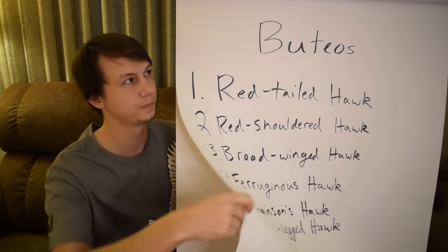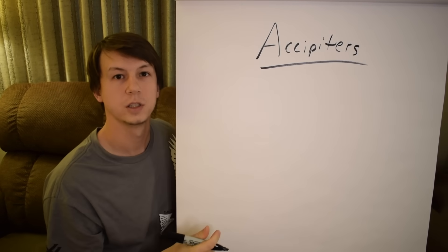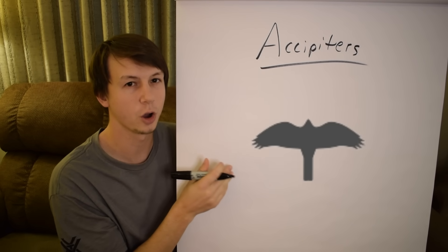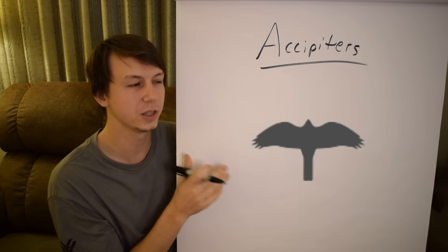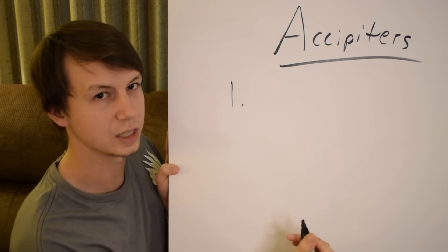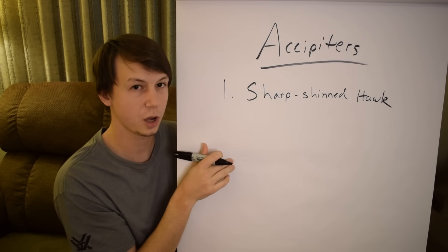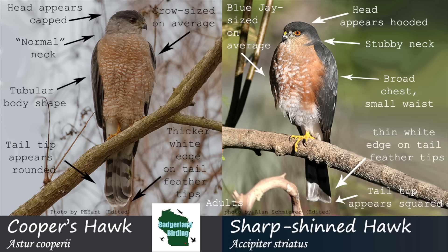Now we're going to move on to our accipiters. This would have been easier until 2024, when we had some really recent taxonomic changes. In general, accipiter hawks are going to have shorter wings and a longer tail — very maneuverable. These are hawks you may see hunting at your bird feeder. That still includes the sharp-shinned hawk. Sharp-shinned hawks look extremely similar to Cooper's hawk. Both have gray-blue backs as adults, a reddish-barred stomach as adults, and fairly long tails, and they can be difficult to tell apart.